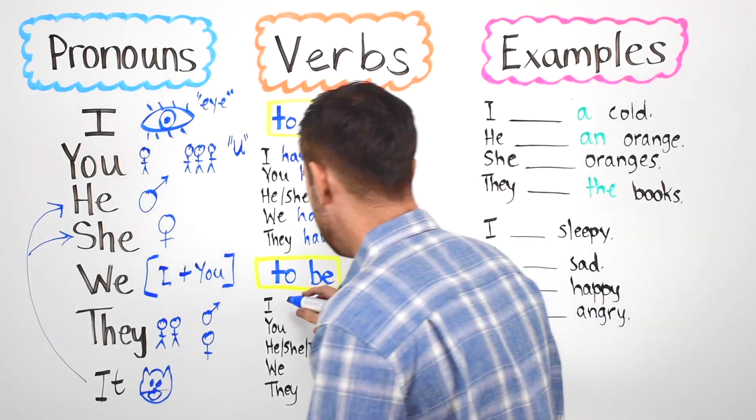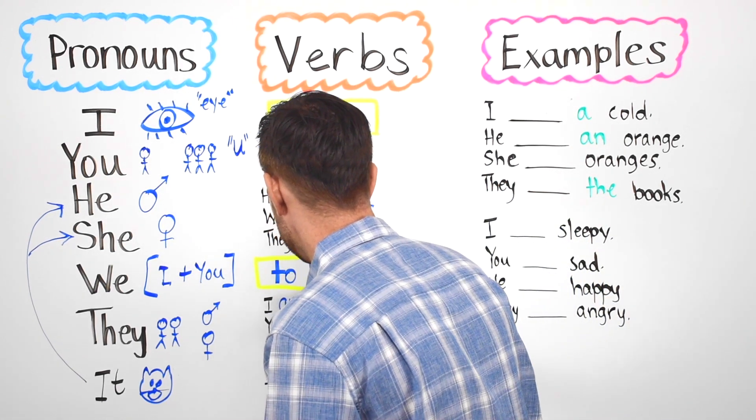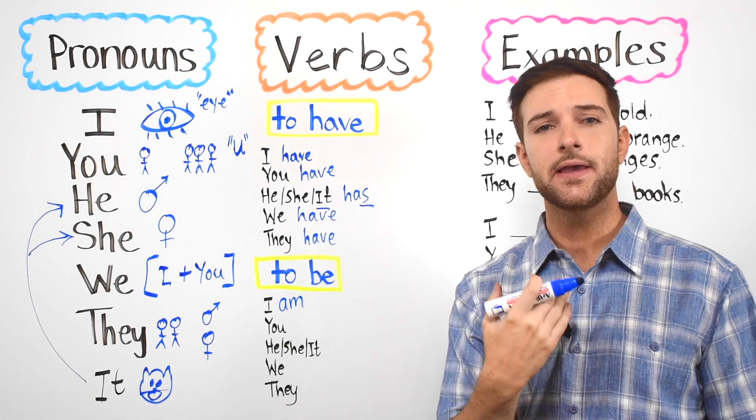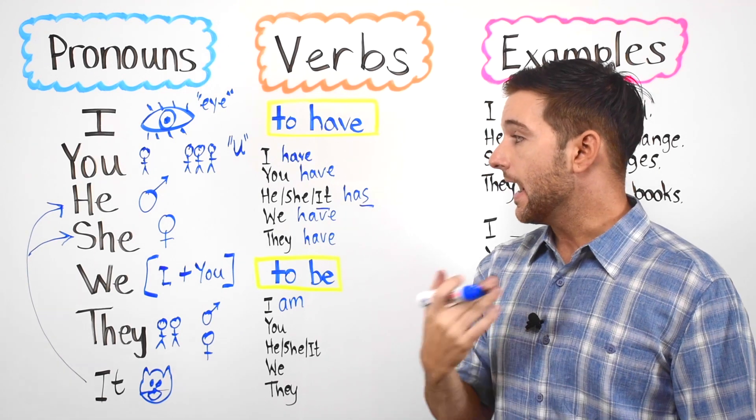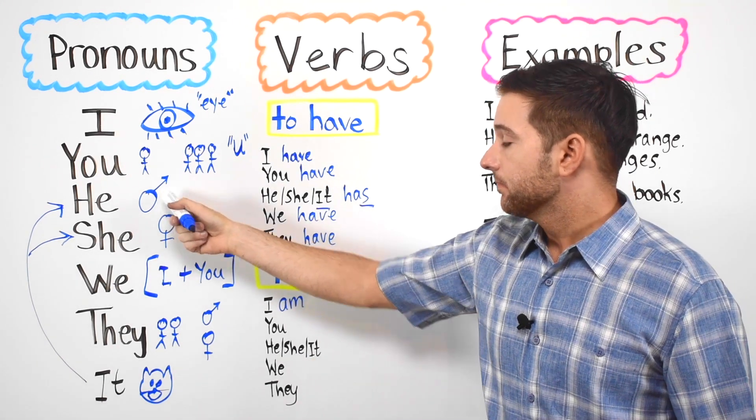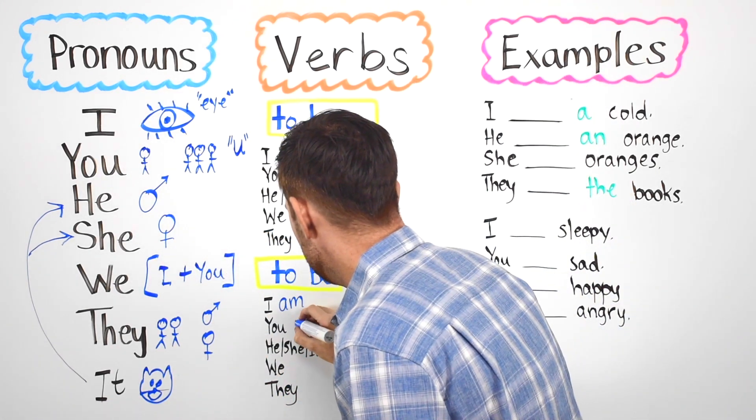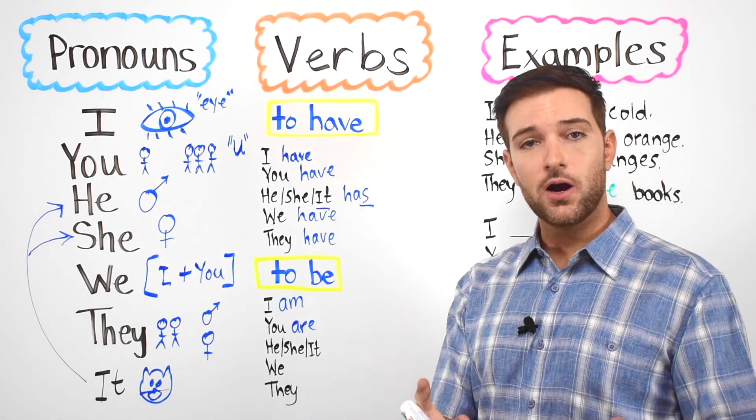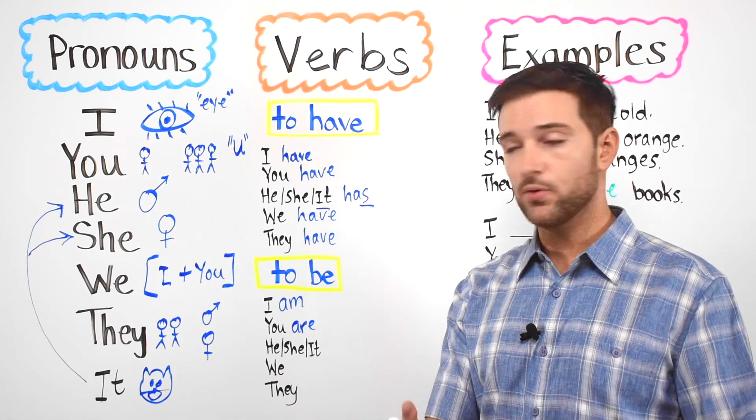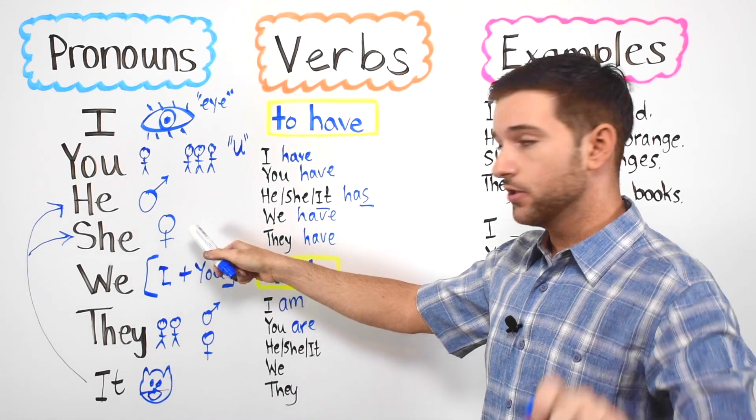It is I am. A M. I am. My name is Oliver. I am Oliver. I am a boy. You are. A R E. You are. You are a student. You are a boy. You are a girl.